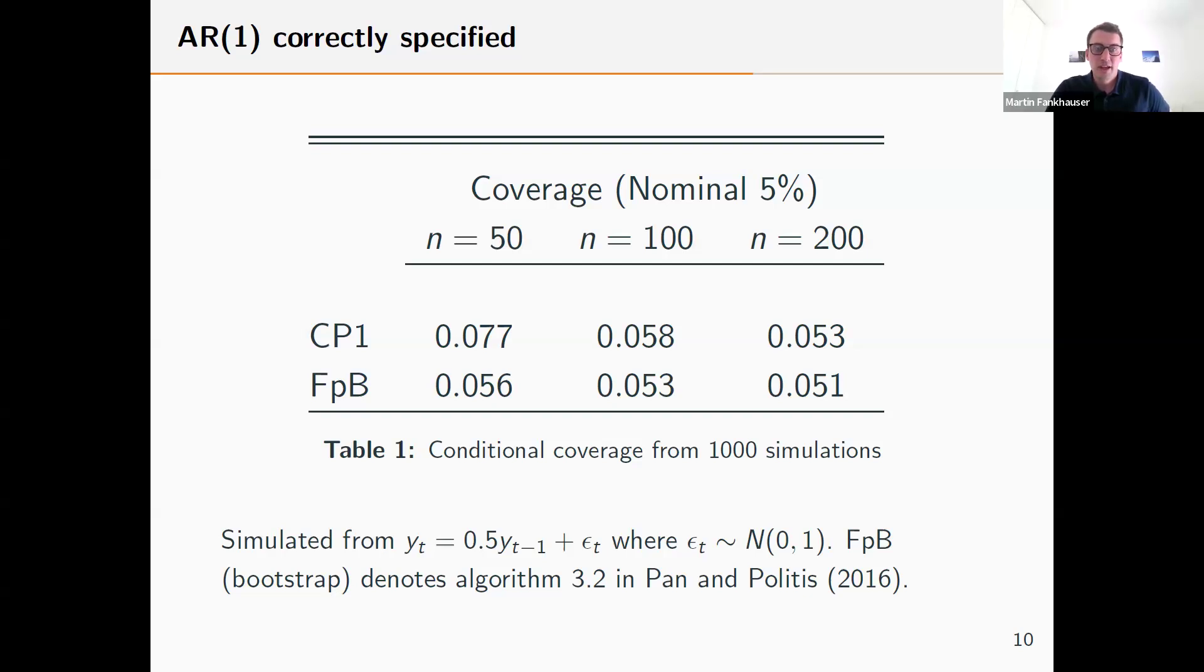In this first simulation, I simulate from an autoregressive model with standard normal errors for different sample sizes: 50, 100, and 200. For each sample size, I fit the model and produce the quantile estimator for the five percent quantile. I simulate a thousand future values and report the fraction of these values falling below the quantile. For this correctly specified case, as reported in other papers, conformal prediction has some problems with very small sample sizes. However, if we increase the number of samples, it works similarly to the bootstrap.